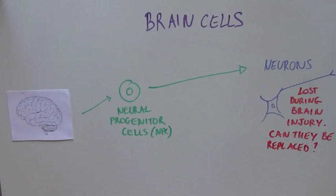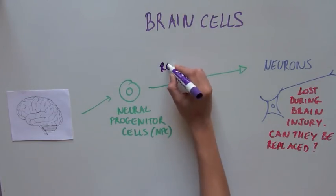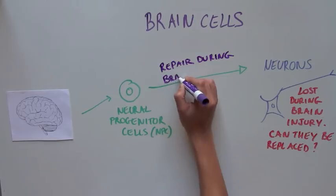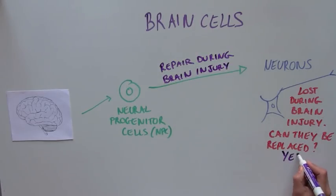But thanks to research such as this one, we now know that these NPCs are very important for brain injury patients to regain cognition and fully recover. So remember these NPC cells, because this is what today's finding is focusing on.